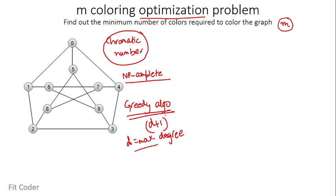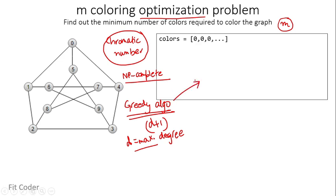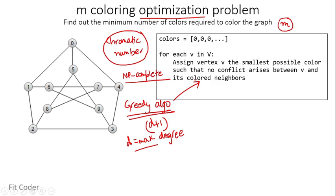There is one greedy algorithm we'll discuss. This algorithm doesn't guarantee using the minimum number of colors, but it guarantees an upper bound — it never uses more than d+1 colors, where d is the maximum degree in the graph. We keep a vector of colors initialized to 0, and for each vertex we assign the smallest possible color such that no conflict arises.